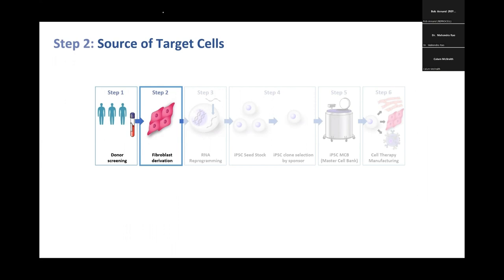In the case of ReproCell it's fibroblasts, so it's a punch biopsy — an outpatient procedure. You normally take it from a region that is not sun-exposed, to reduce the risk of environmental DNA damage so that your cells are as pristine as possible. A younger donor is better than an older donor, and a female donor is often considered better in terms of tissue matching, though there is no specific regulatory requirement on that basis.